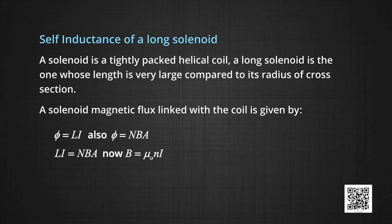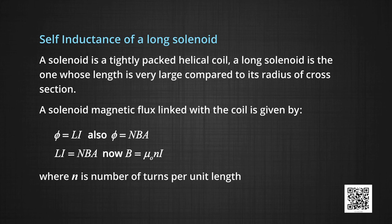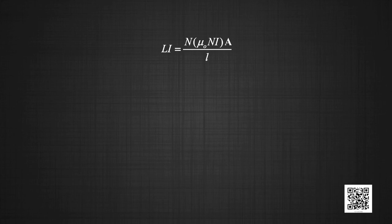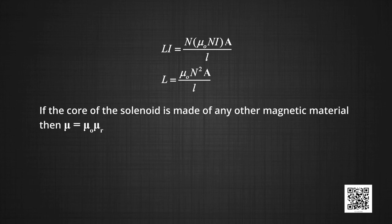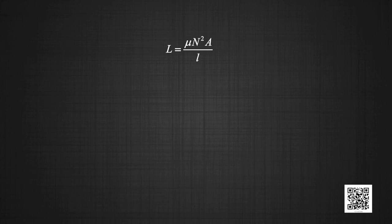For a solenoid, B is equal to mu naught nI, where small n is the number of turns per unit length. So L into I becomes equal to N times mu naught nI by L, all into A. Here capital N upon L becomes small n which is the number of turns per unit length. So L becomes equal to mu naught capital N squared A upon L. If the core of the solenoid is made of any other magnetic material, then mu, the magnetic permeability through that material, becomes equal to mu naught times mu R, where mu R is the relative permeability. So L is equal to mu naught mu R N squared A by L.